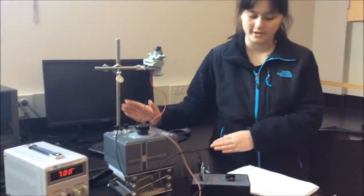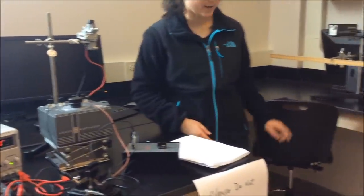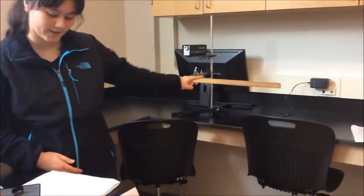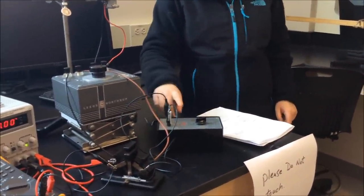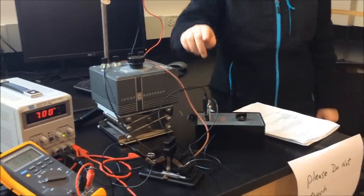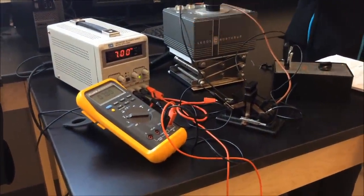What you're going to need for this lab consists of this setup right here, which is a ballistic galvanometer and a stand. You're going to need a meter stick attached to a stand, a laser light source, two unknown capacitors, a capacitor decade box, a switch, power supply, and a DC voltmeter.